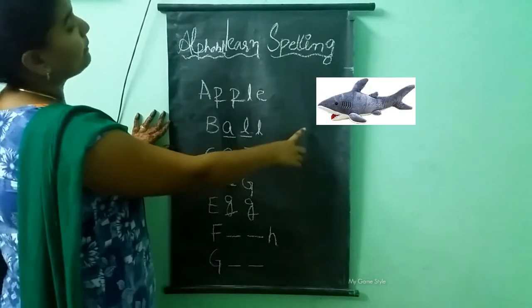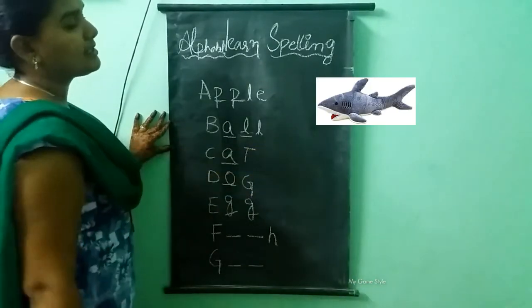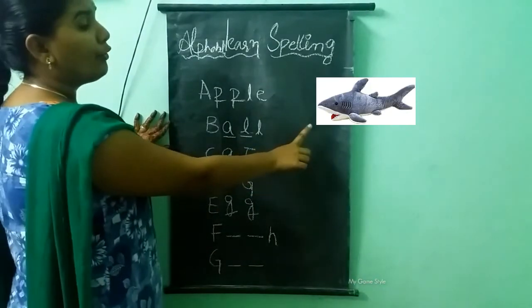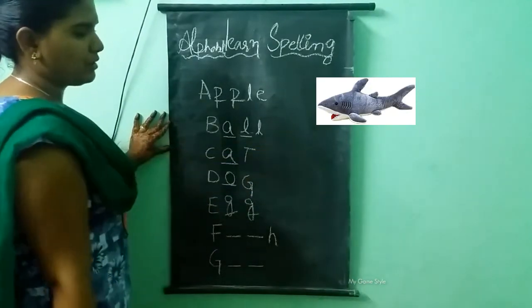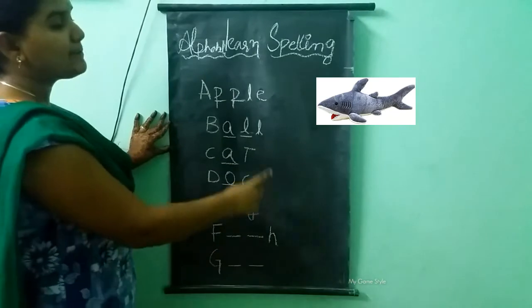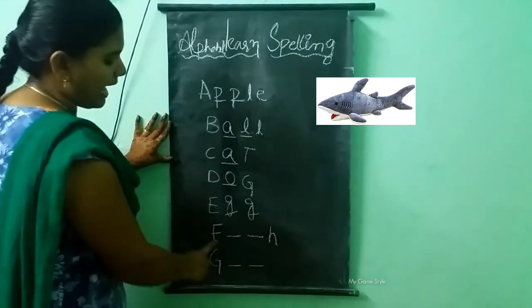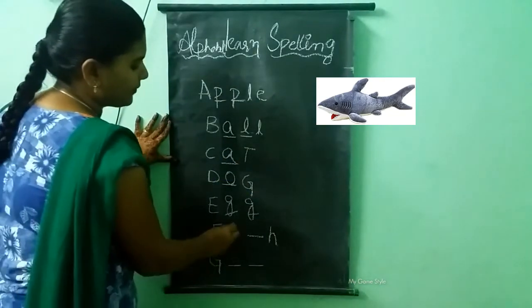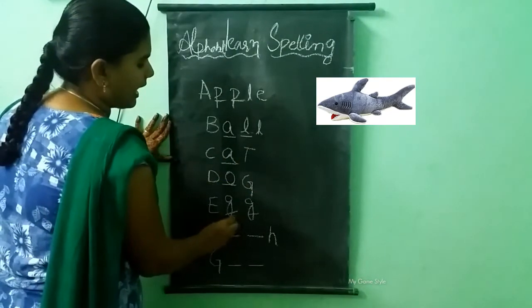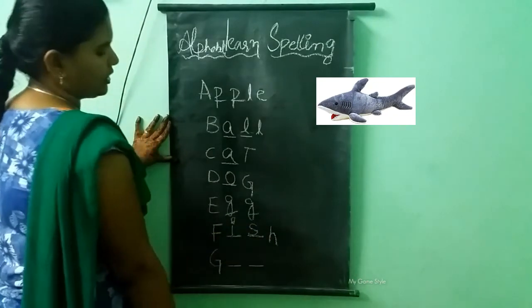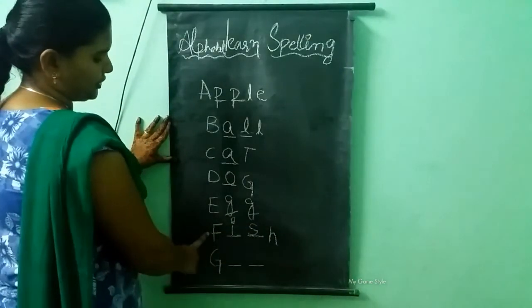What picture is this? This is a fish. What is the spelling of fish? F-I-S-H. Fish.